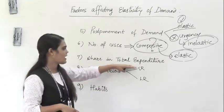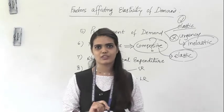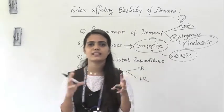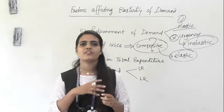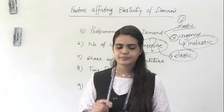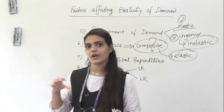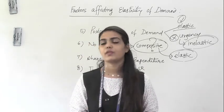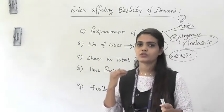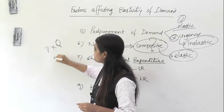The share in total expenditure also affects the degree of responsiveness of demand. In economics, terms like cost, price, expenditure, revenue, and income each mean something very specific. When you say expenditure, you mean price multiplied by quantity. If one unit of a product is ₹10 and you purchase two units, your total expenditure is ₹20. Price alone is not your expenditure.